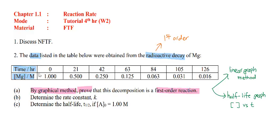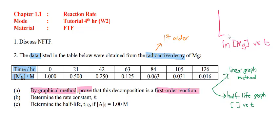Back to our tutorial question. Since the question just says 'graphical method,' you can use either the linear graph method or the half-life graph — both are correct. If you plot the linear graph, since this is first order, the graph you should plot is ln[Mg] versus time. Your graph should look like a straight line, with ln[Mg] on the y-axis and time on the x-axis.